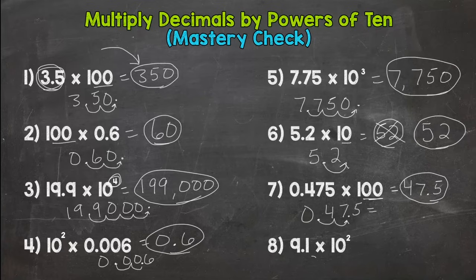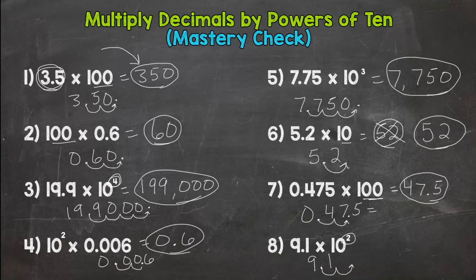And then number 8, 9.1 times 100, or 10 squared, or 10 to the 2nd power. Exponent of 2, so move the decimal twice. 1, 2. Fill with the 0, and we end up with 910.